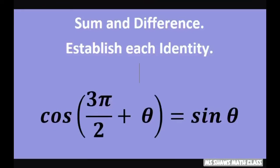Hey everyone, we're going to establish this identity using sum and difference formulas. Cosine of 3π divided by 2 plus theta equals sine of theta.